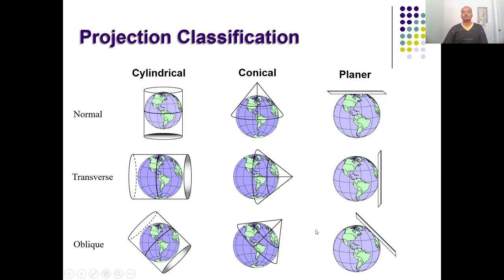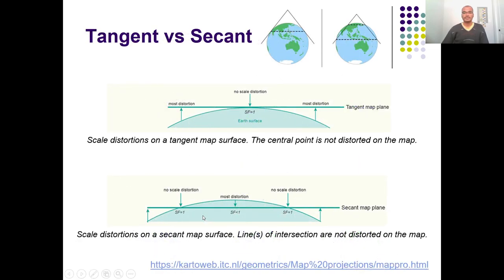These broad types of map projections are further subdivided in terms of how you orient the developable surface. Normally you cover the globe with the cylinder in the standard way, the cone, and the planar surface — but this is not necessary. You can also cover the globe by traversing or rotating your cylindrical, conical, or planar systems. You can rotate your coverage area and maintain any angle of interest to cover a particular portion. So these three broad types of map projections are further subdivided into normal, transverse, and oblique. The developable surface generally touches the globe at one point or along a line, but it can also touch at two locations.